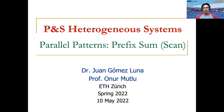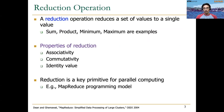Before we go into the details of prefix sum, let me very quickly remind you what parallel patterns we have covered so far. We started with reduction, an operation that reduces a set of values to a single value. It requires an associative commutative operator that also has an identity value — for example, sum, product, minimum, or maximum. Reduction is a key parallel primitive in, for example, the MapReduce programming model.